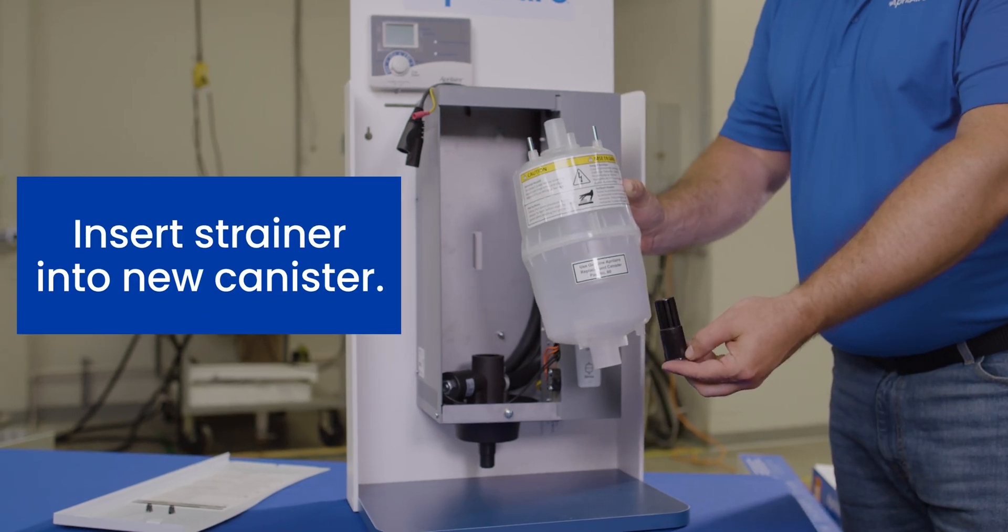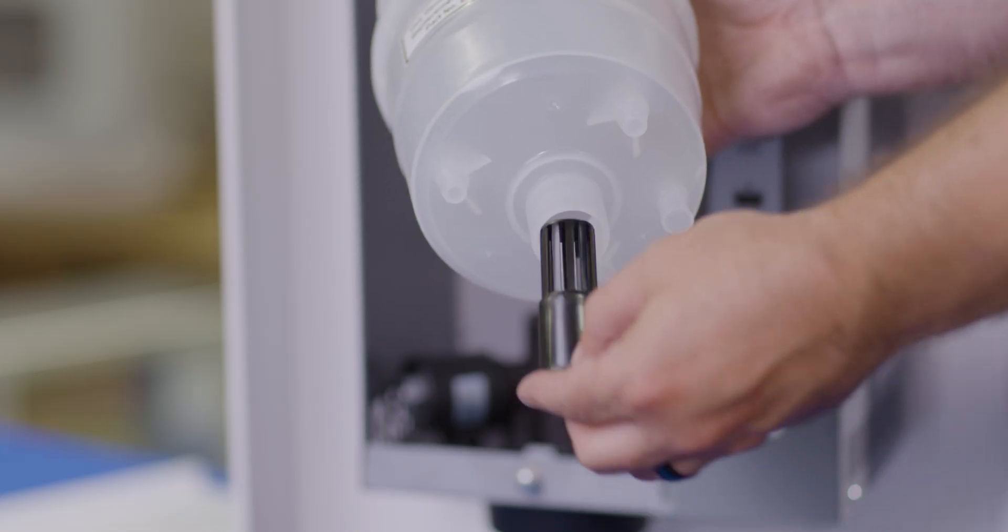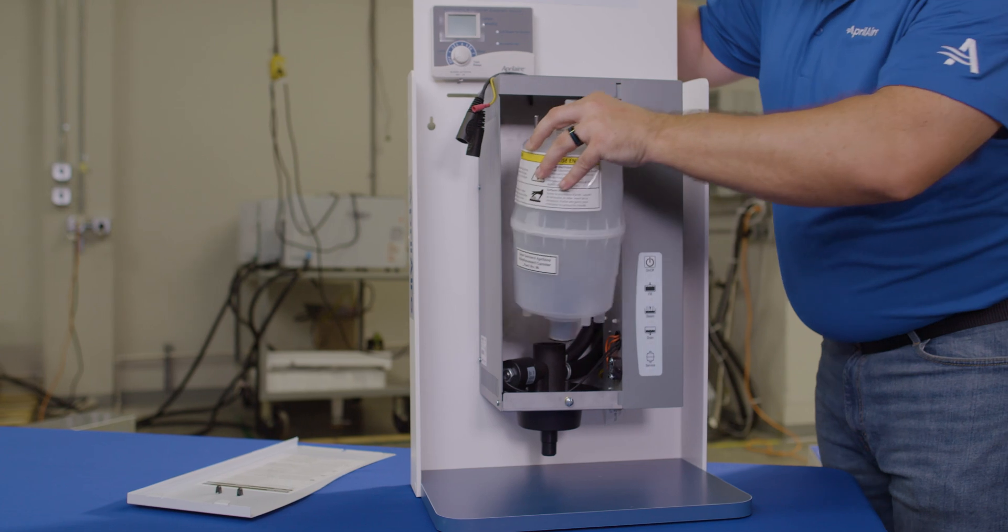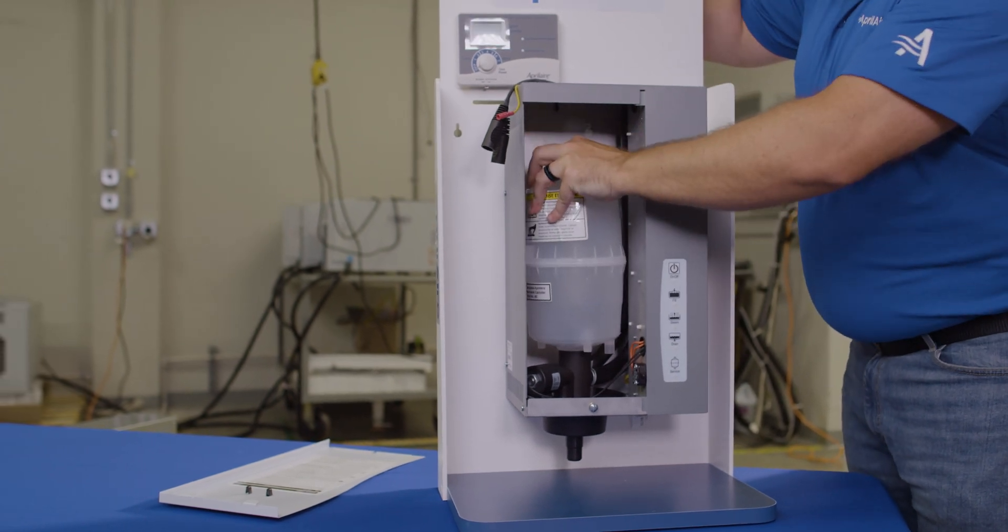Now make sure that the strainer is inserted at the bottom of the new canister and place the canister in the receptacle where you just placed that o-ring. Make sure that the label is facing out.